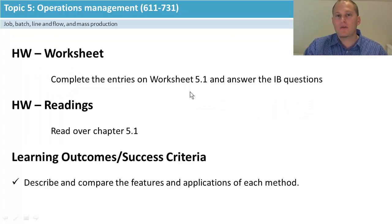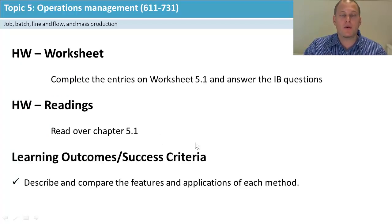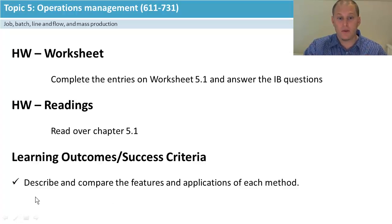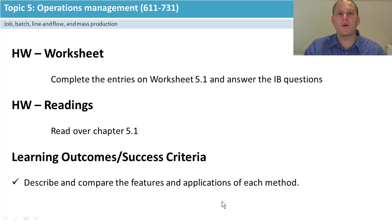In the description bar below there's a worksheet to work through, and also the in-video questions from your textbook — have a read over 5.1. If you don't have the textbook I've got a big summary PDF in the description. Check whether you can now describe job, batch, mass and flow, compare between them, and apply to a case — including what the implications would be of switching from one method to another.